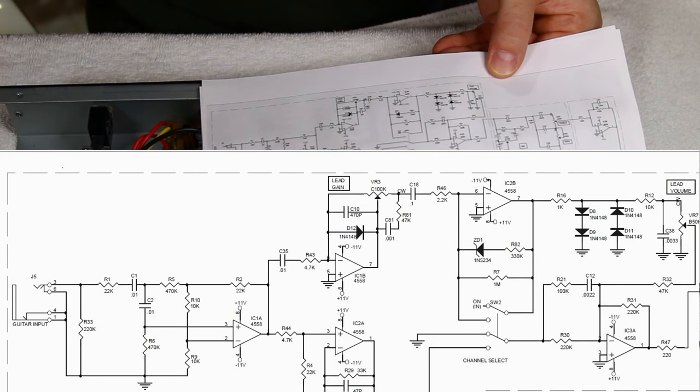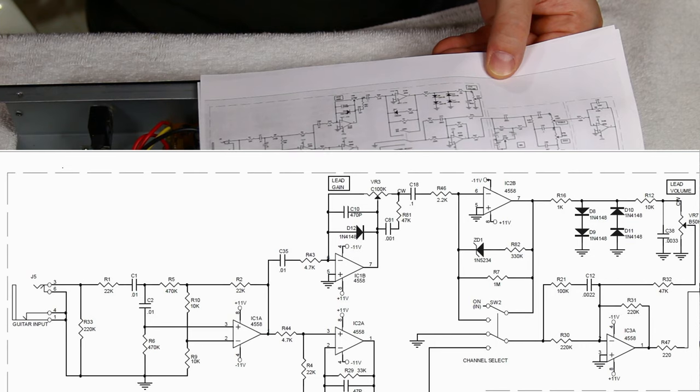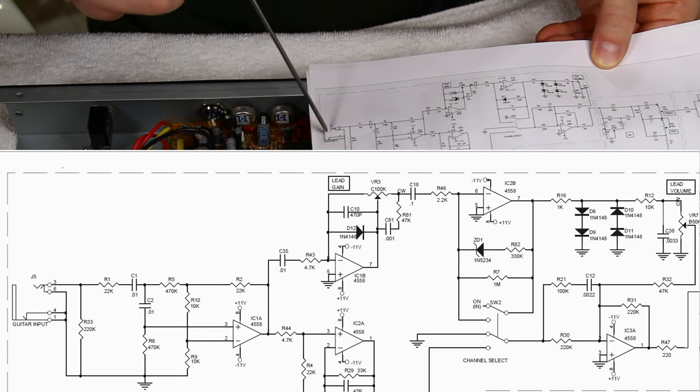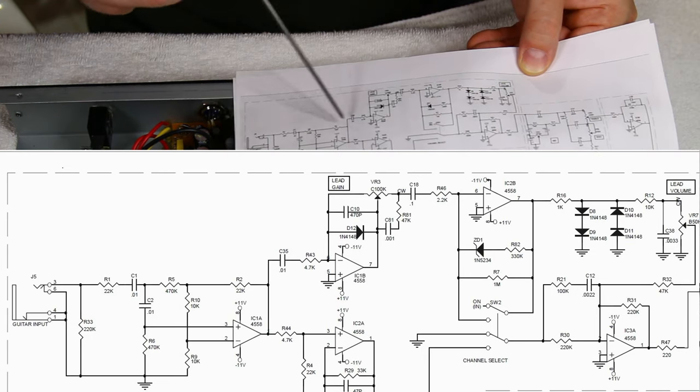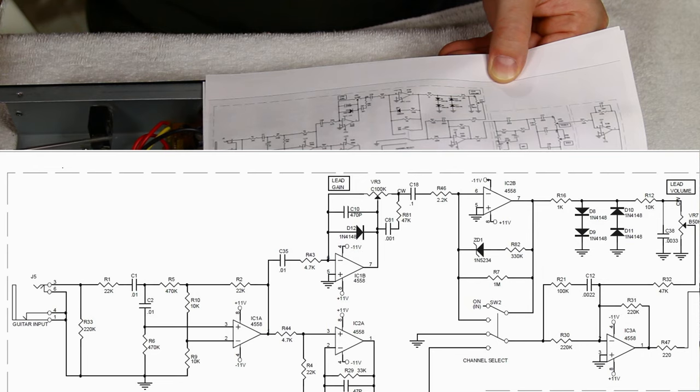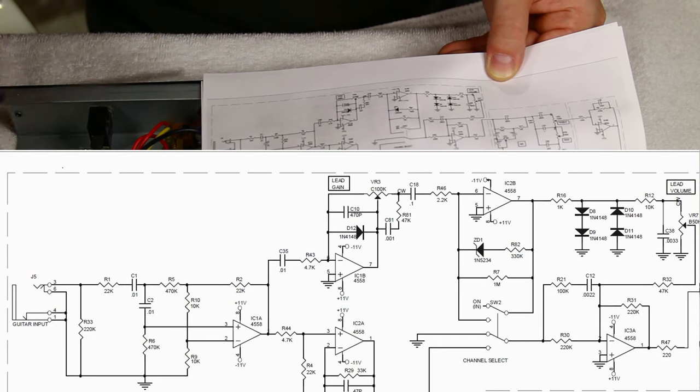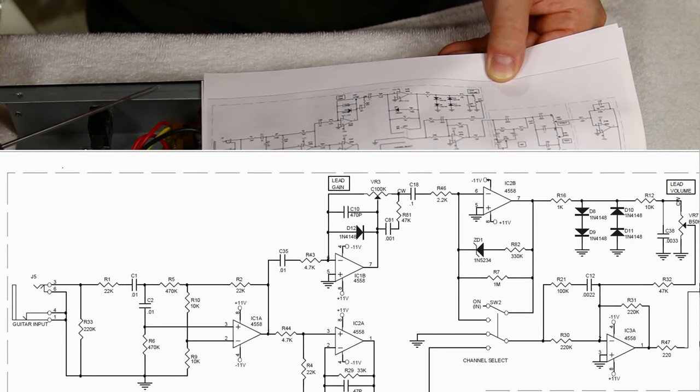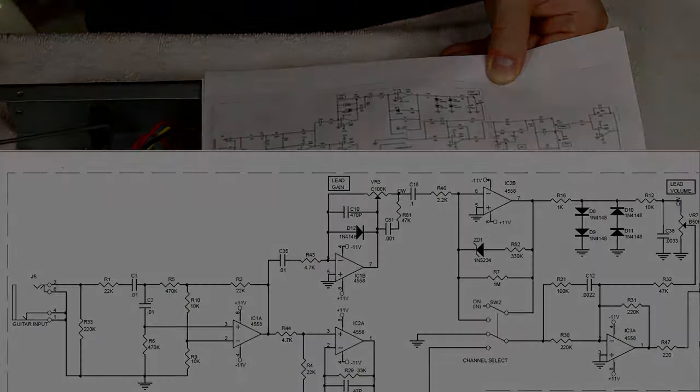But what we'll do, we'll stick an oscilloscope on there and we'll see what our signals look like. So what I'm going to do today is I'm going to feed the input with just the sine wave and then start experimenting with adjusting and capturing the sine wave on the oscilloscope as it is with the stock circuit.